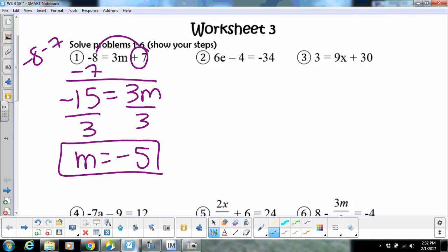Doesn't matter if your m's on the right or left. I just like to have my variable on the left. Same thing here, number three. I'm going to move this 30, so that's going to become negative 27 equals 9x. Then I'm going to divide by nine and x is going to equal negative three.